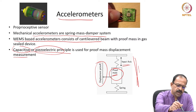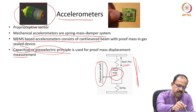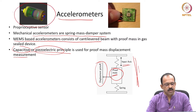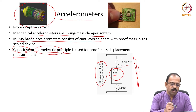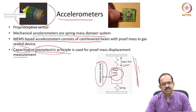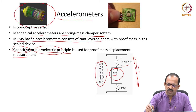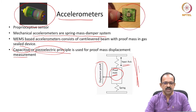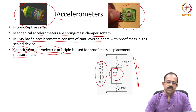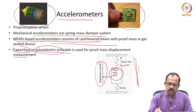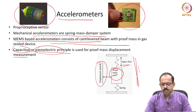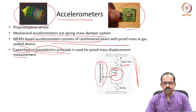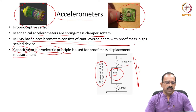The mechanical type of accelerometer — basically the spring-mass-damper system — is large in size compared to current generation MEMS-based accelerometers, which are very small and can be seen in a chip. The MEMS principle uses a cantilevered beam with a proof mass in a gas-sealed device. That is the principle of the accelerometer.